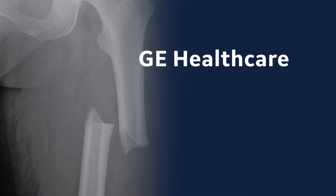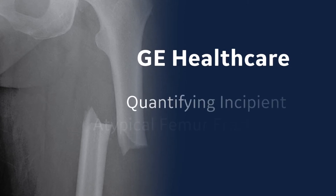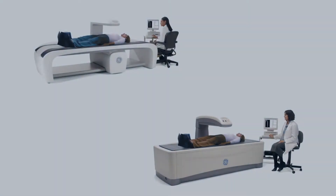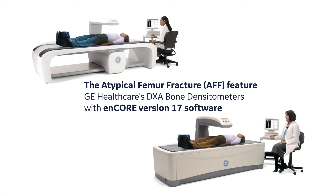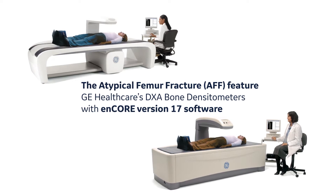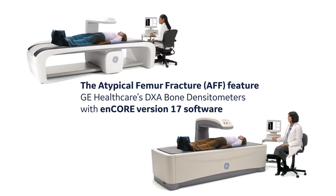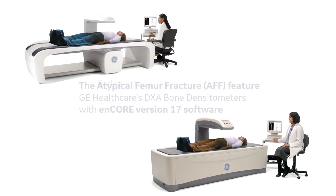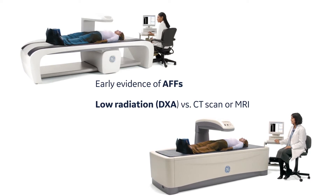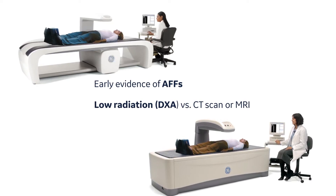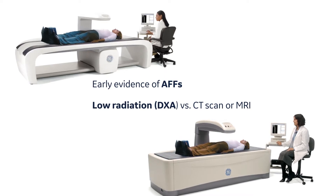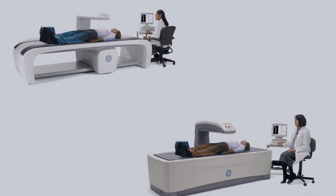GE Healthcare: Quantifying Incipient Atypical Femur Fractures. The optional atypical femur fracture feature in GE Healthcare's DEXA bone densitometers with Encore version 17 software provides clinicians with the ability to identify and assess early evidence of AFFs without exposing patients to additional radiation through a CT scan or to the cost and inconvenience of an MRI.